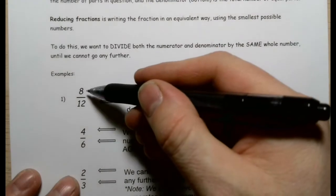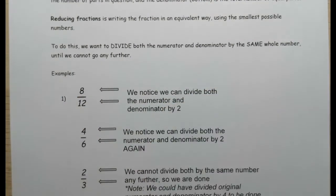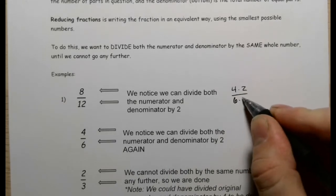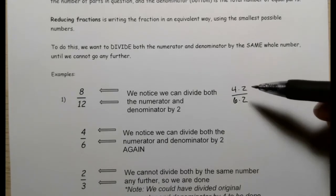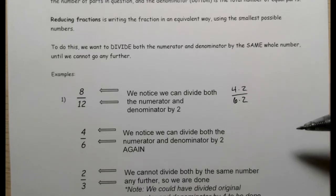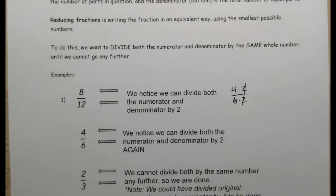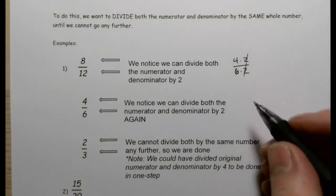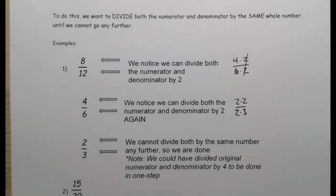Both eight and twelve can be written as four times two and something. Because of the freedom with operations, I can do two divided by two early on — two divided by two is one — so I'm multiplying by one, which gives me four over six. Then four over six: four is divisible by two and so is six. Two divided by two becomes one, so we're left with two-thirds. We could have divided the original numerator and denominator by four right at the start.